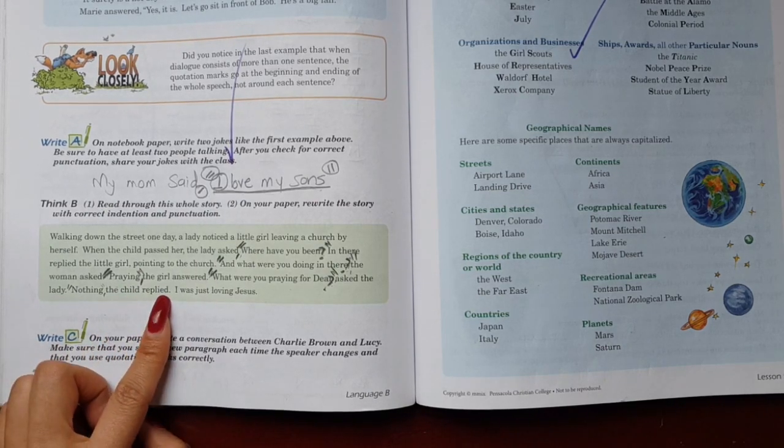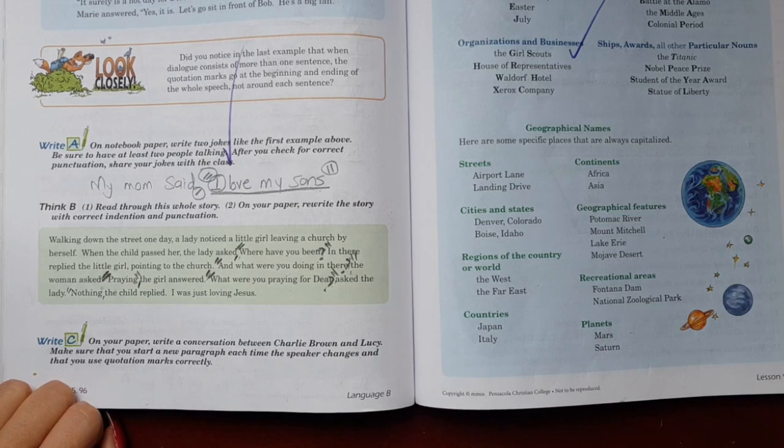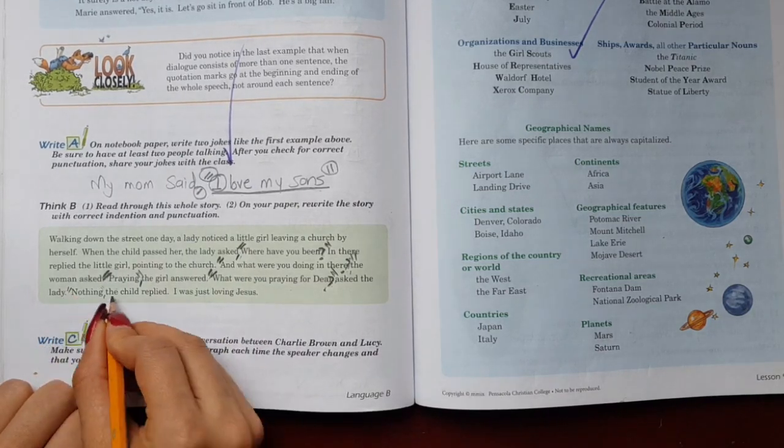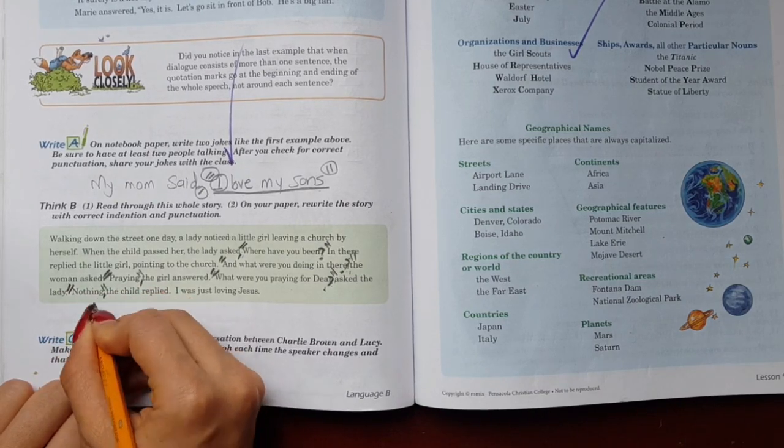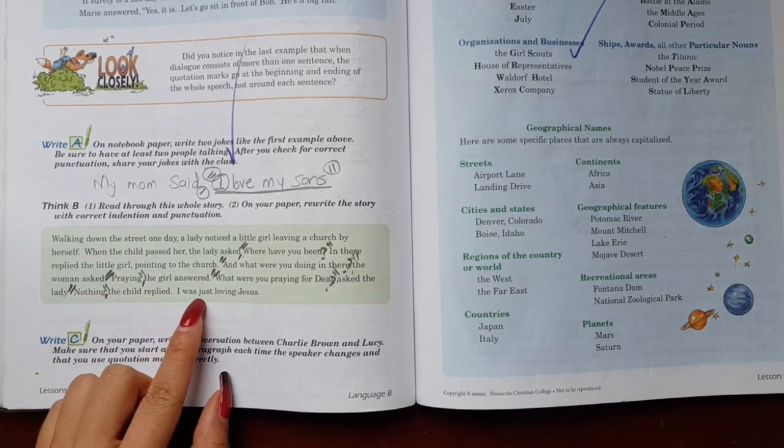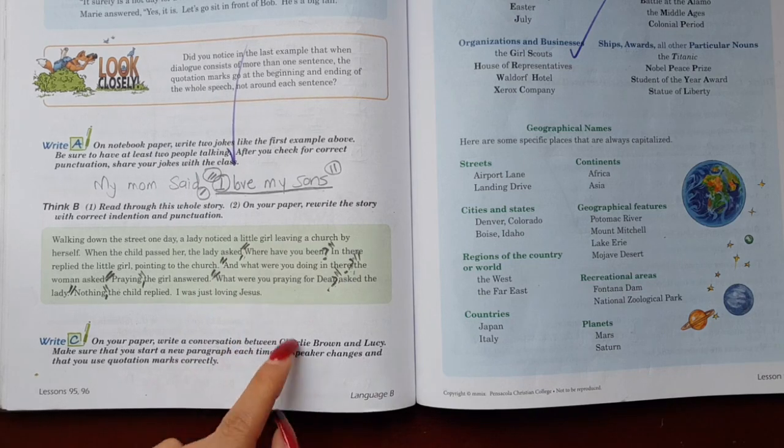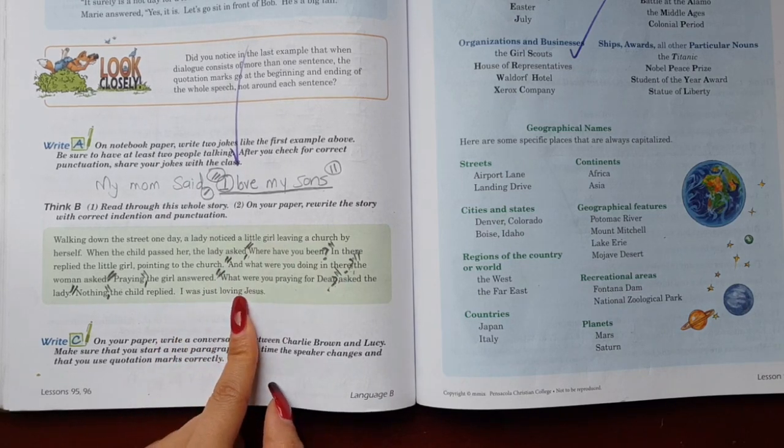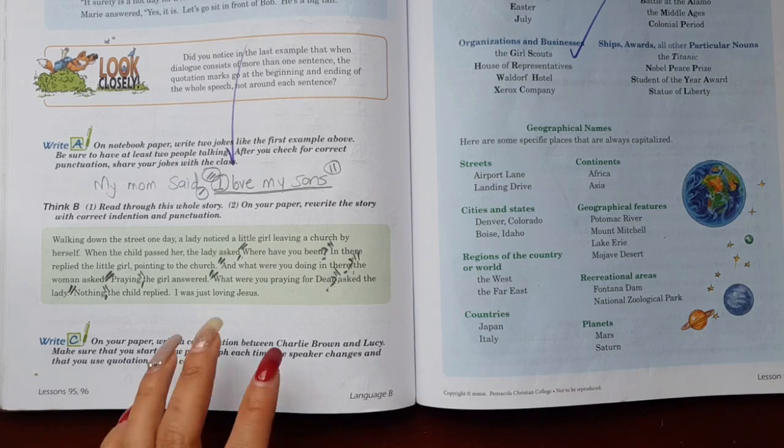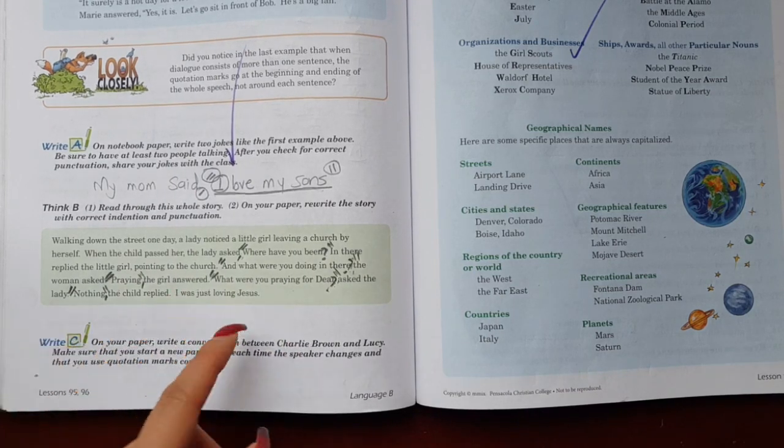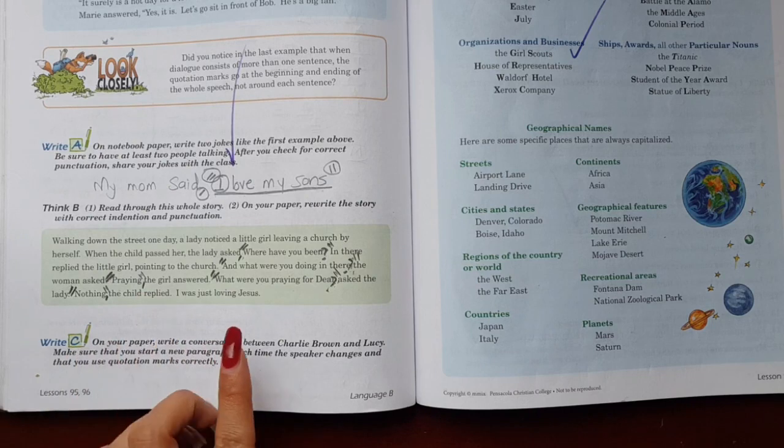Nothing, the girl answered. Nothing, the girl answered. What did the girl answer? Nothing. Nothing, the girl answered. I was just loving Jesus. I was only loving Jesus, or I was only worshiping him. Not what she was praying for, but she was only worshiping him.